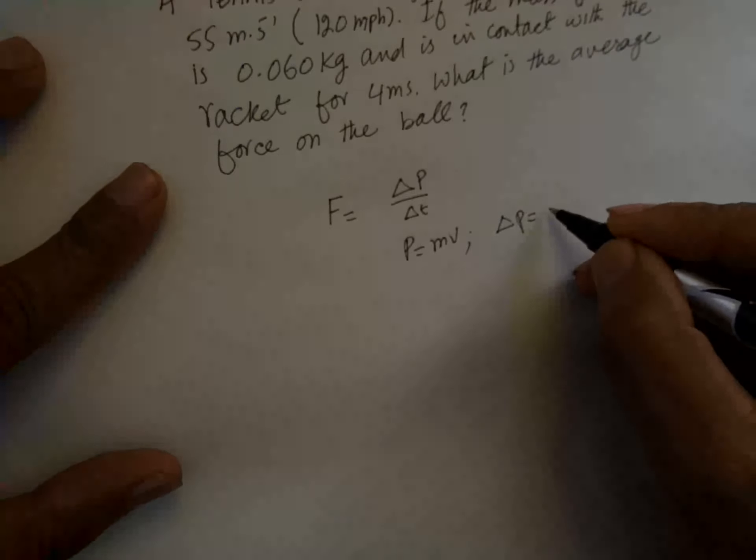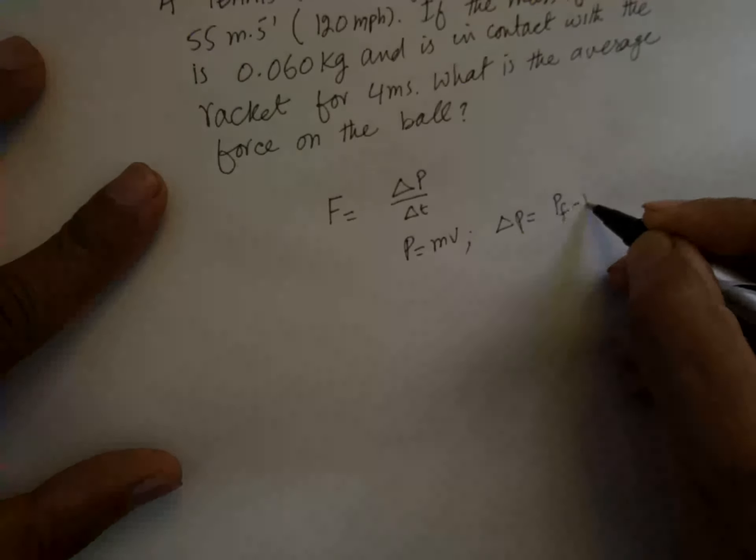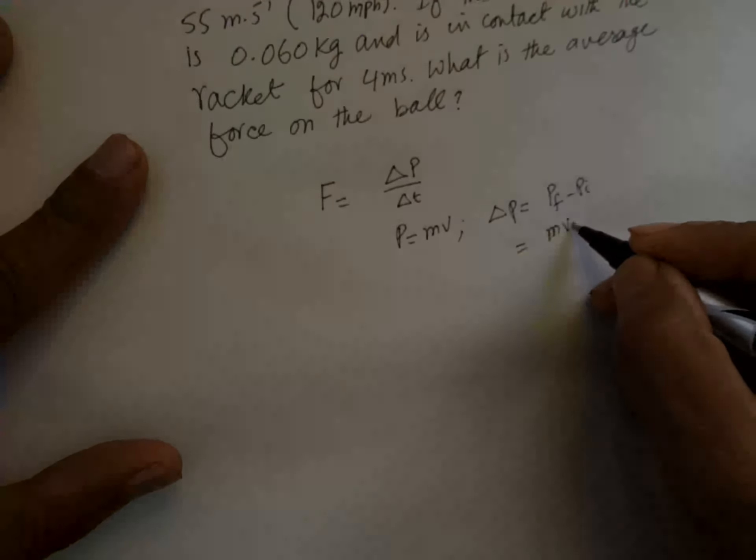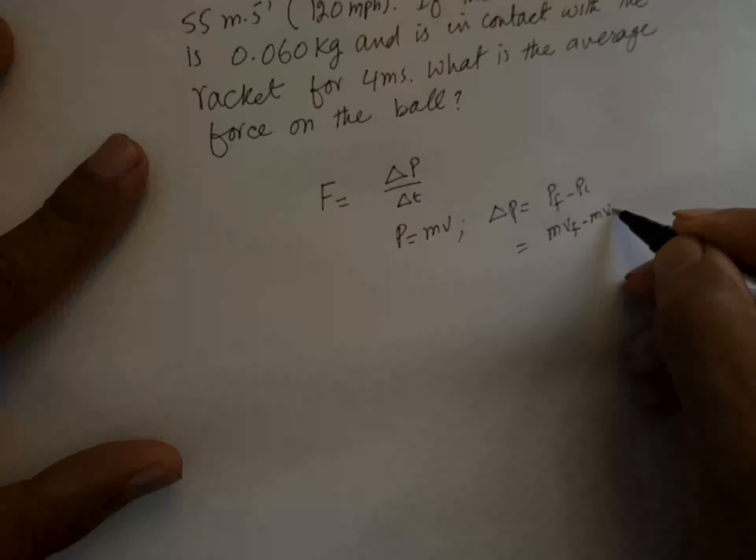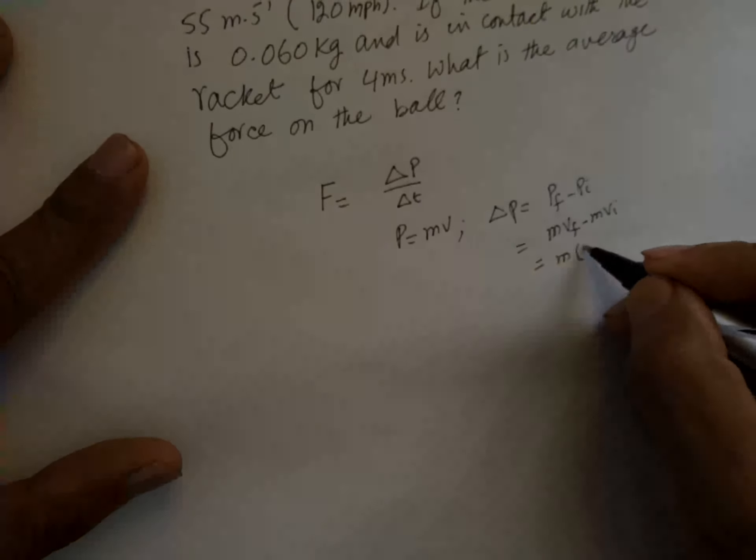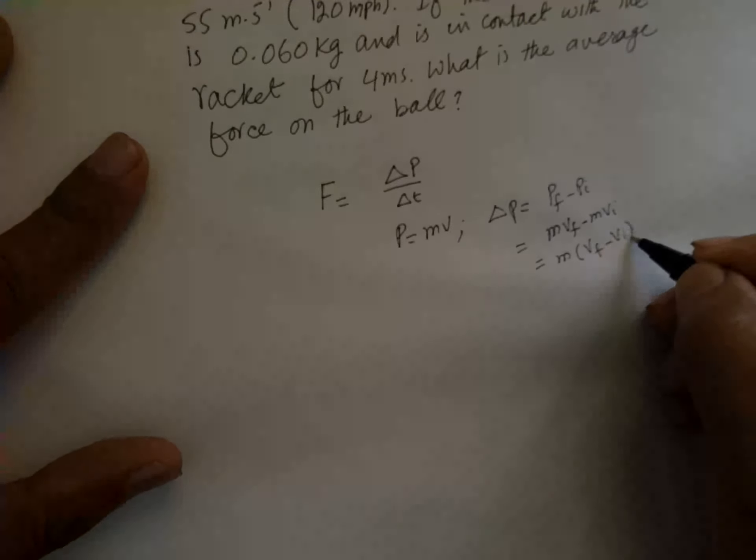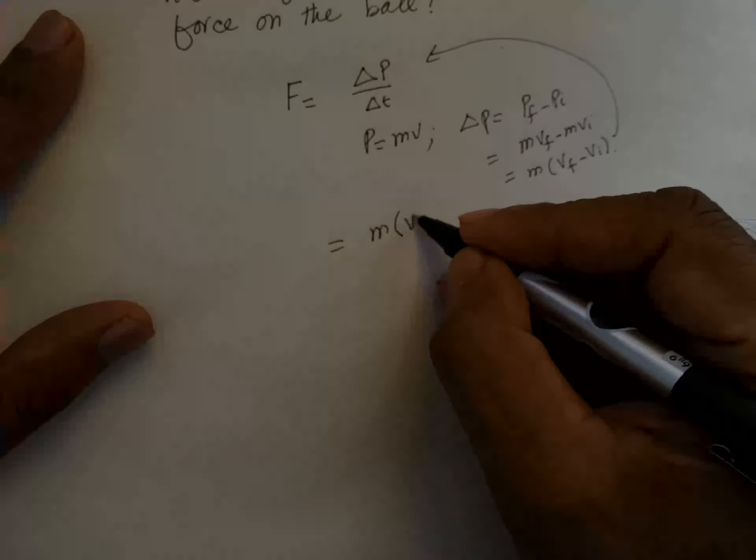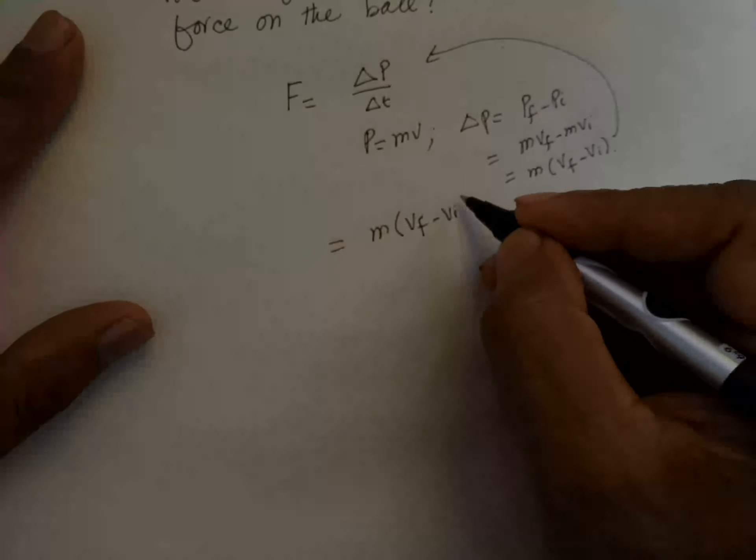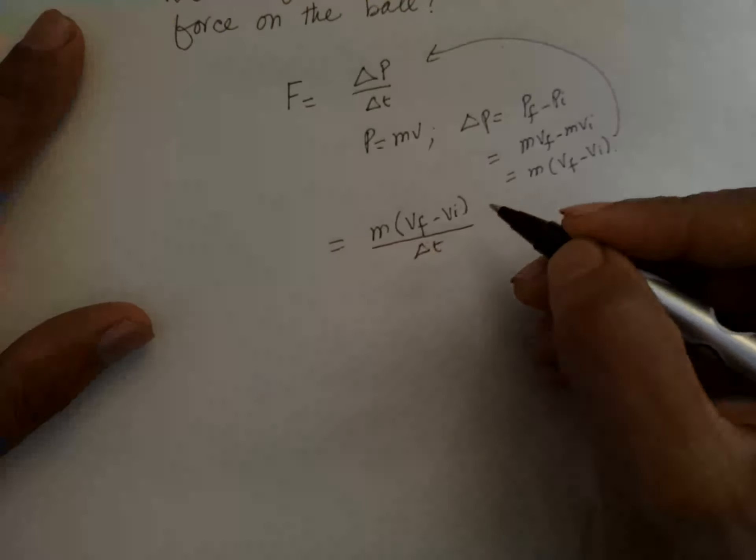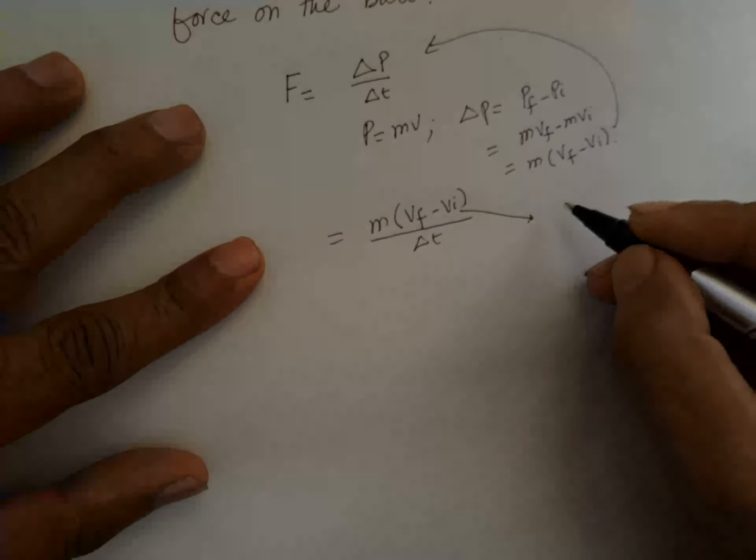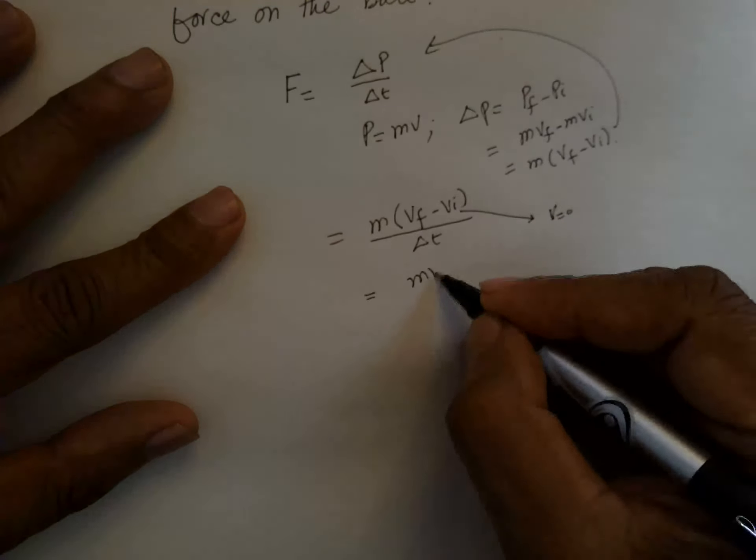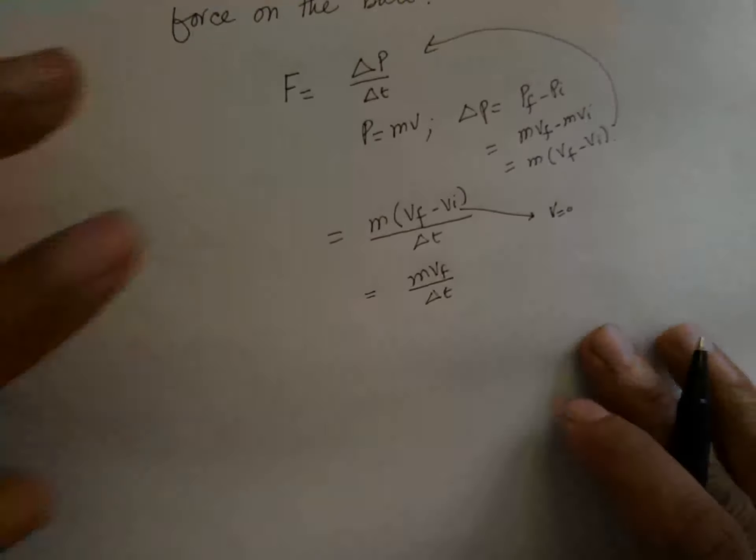Delta P is equal to P final minus P initial, which is equal to M V_f minus M V_i, or M(V_f - V_i). If you substitute this value here, this will be equal to M(V_f - V_i) over delta T. Since V_i is 0, this becomes M V_f over delta T.